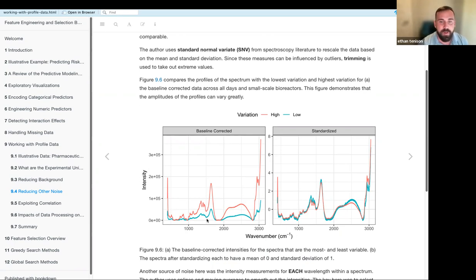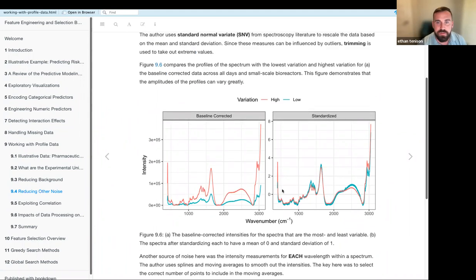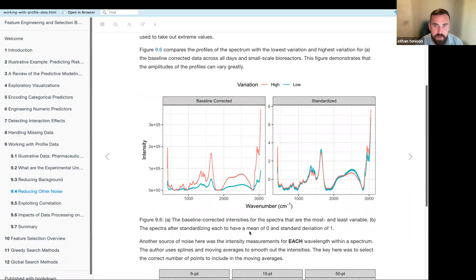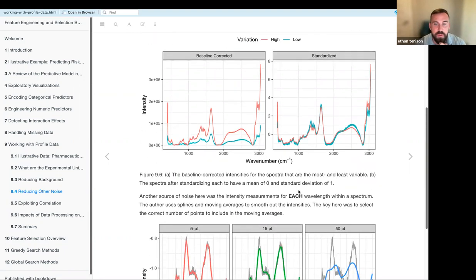I think that this was about the variation within the wavelengths itself within one reactor. They do something else later to fix the difference between the small and the large reactors, but this is a similar concept. You see that from there's two different intensities for high and low variation. So you see this difference right here. And they do a process of standardization to make sure that the variation between those two tracks remains relatively the same. So we've got baseline correction, now standardization.